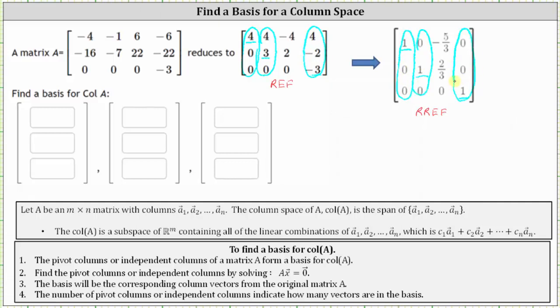Identifying column one, column two, and column four of the original matrix A, we know a basis for the column space of A contains these three vectors.